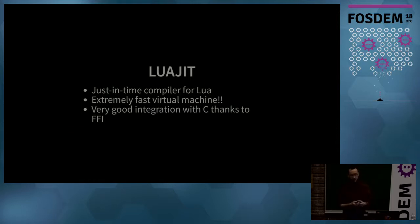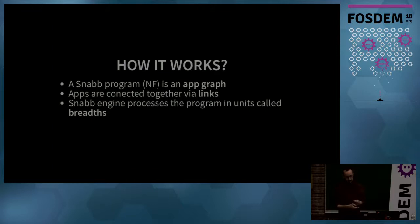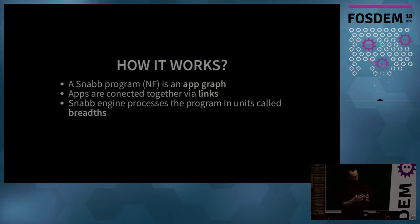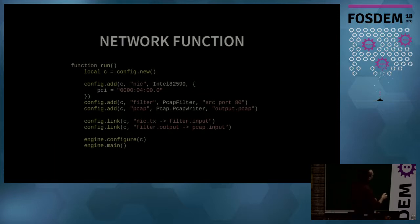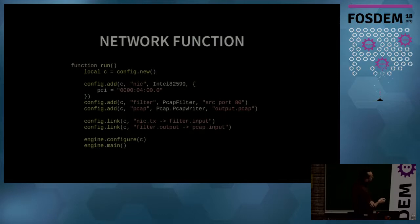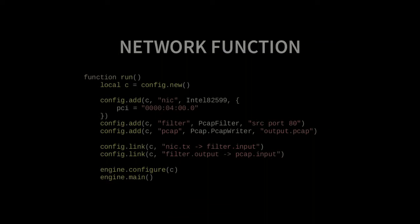In SNAP, most data types and data structures are actually defined in C. A network function is essentially a collection of apps connected together via links. Once we have this graph of apps, we pass it to the SNAP engine which runs it in units called breaths. Here's an example of a basic program in SNAP: we start with configuration, instantiate the apps we need — a NIC driver to read packets, a filtering app to filter packets with source port 80, and a pcap app to write packets to an output file. Then we connect these apps together and run it.